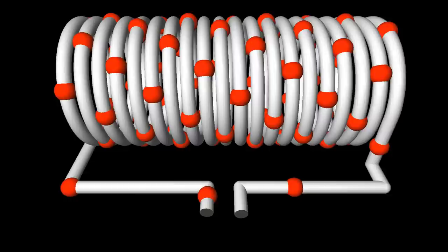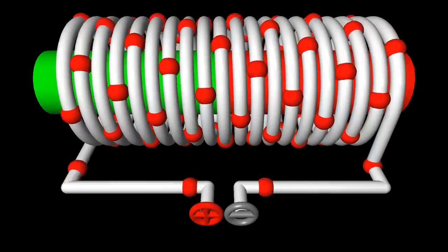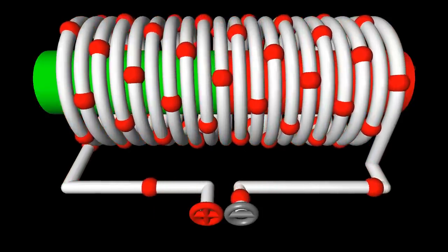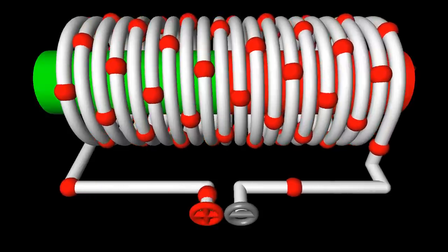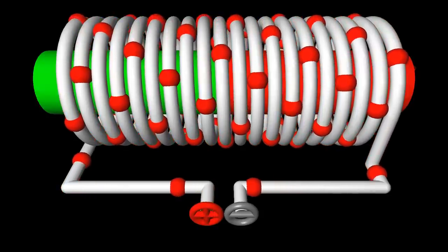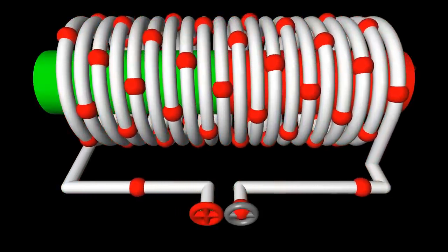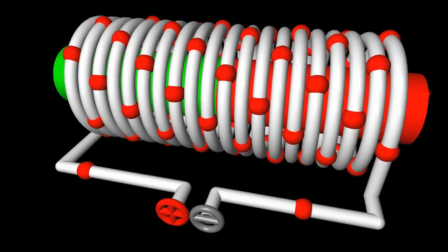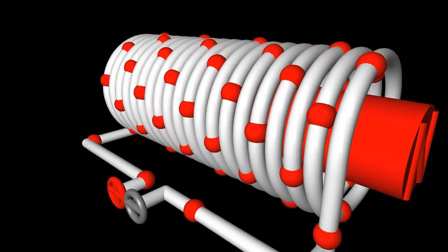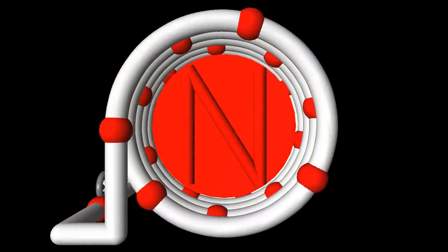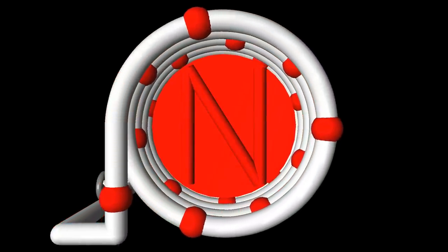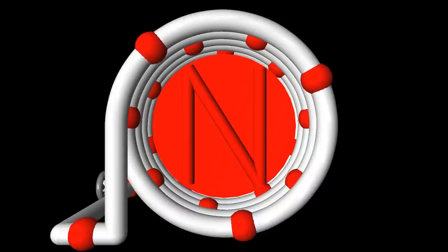As soon as the current flowing through the electromagnet is turned off, the magnetic field disappears. When swapping the polarity of the voltage source, the positive terminal is now located on the left, so the flow of positive charges changes direction. Now the magnetic north pole is at the right side of the solenoid, where the current rotates counterclockwise at that end.